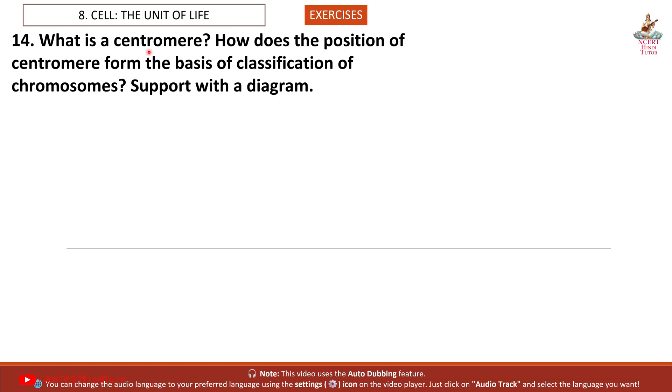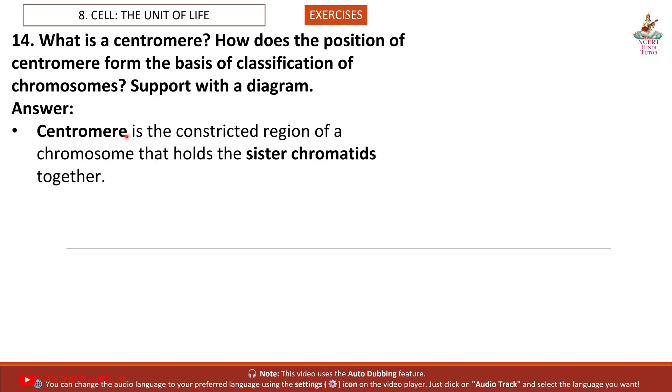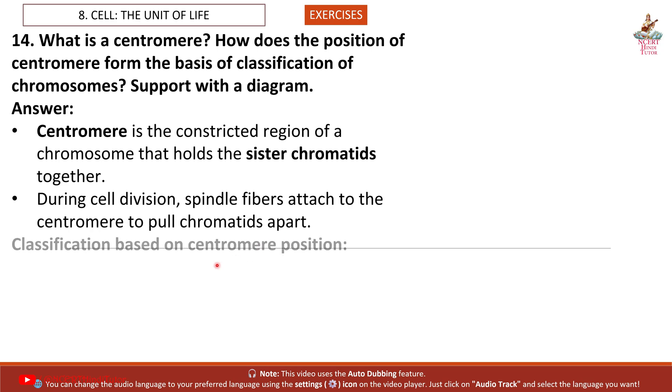Question 14: What is a centromere? How does the position of centromere form the basis of classification of chromosomes? Support with a diagram. Answer: Centromere is the constricted region of a chromosome that holds the sister chromatids together. During cell division, spindle fibers attach to the centromere to pull chromatids apart.